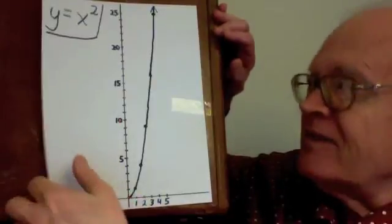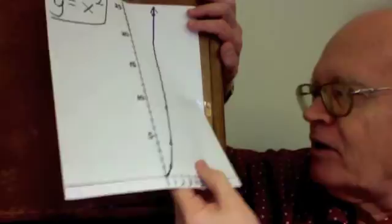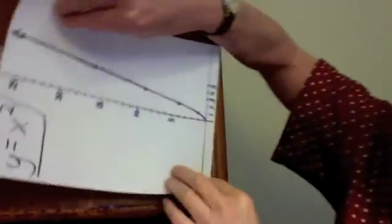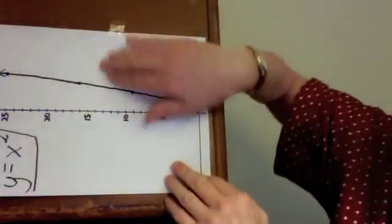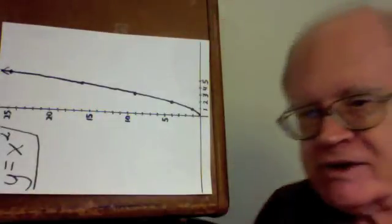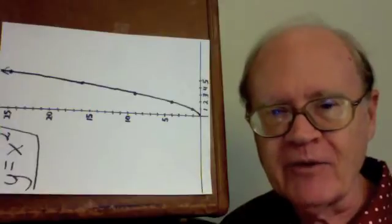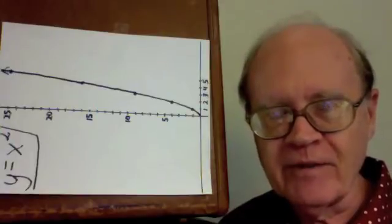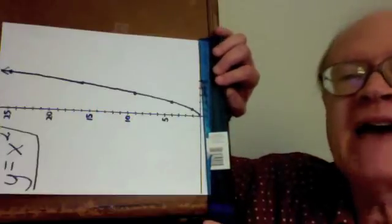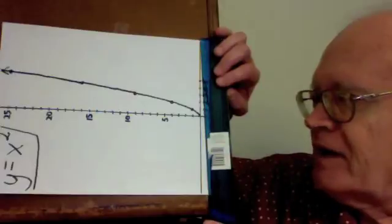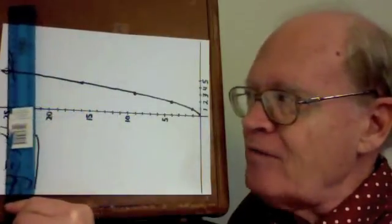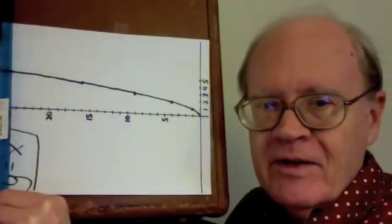Now I'm going to take this graph and rotate it counter-clockwise 90 degrees — from this position to this position. So it's now sideways. And now I'm going to ask the same questions. Does this graph have a left vertical boundary? Does it have a right vertical boundary? Well, it certainly has a right vertical boundary — here's one. This graph does not get past this vertical line; it doesn't go to the right of it. Does it have a left vertical boundary? No, it does not. No matter how far out I move a vertical line to the left, the graph gets past it.